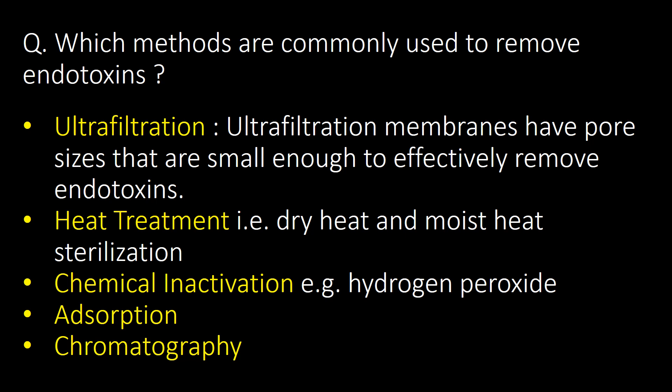Which methods are commonly used to remove endotoxins? First is ultrafiltration — this is a compulsory method for WFI treatment or WFI generation systems, as ultrafiltration membranes have pore sizes small enough to effectively remove endotoxins. Second is heat treatment — both dry heat and moist heat can effectively remove endotoxins. Dry heat sterilization is commonly used in depyrogenation tunnels and depyrogenation ovens. Third is chemical inactivation using hydrogen peroxide, and two additional methods are adsorption and chromatography.